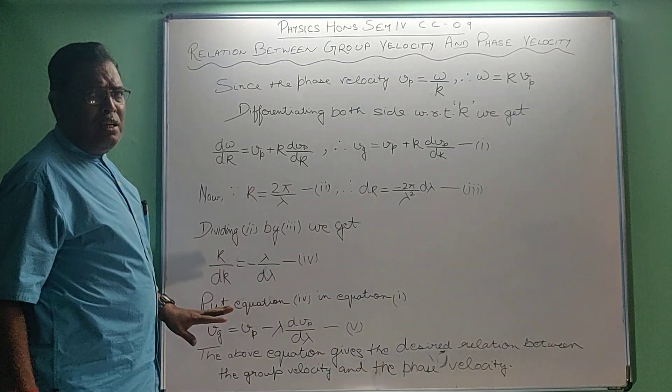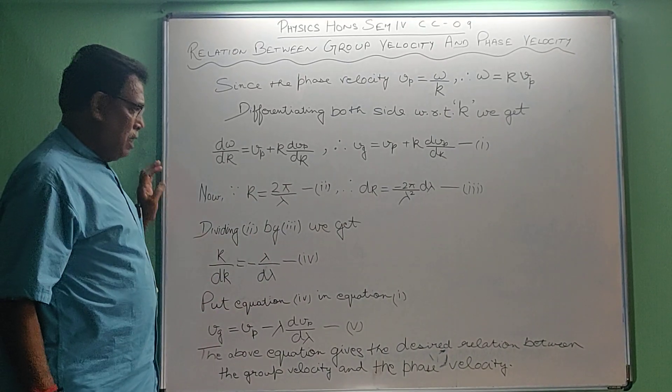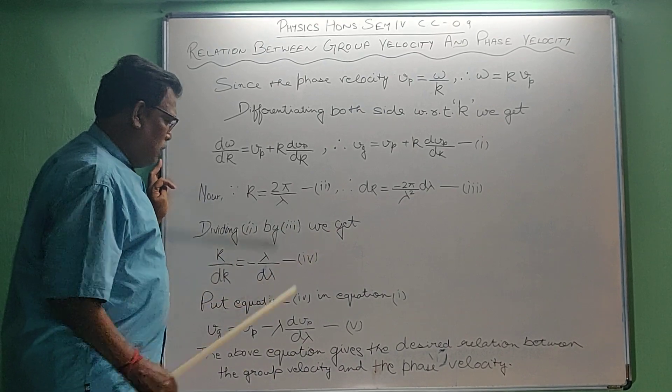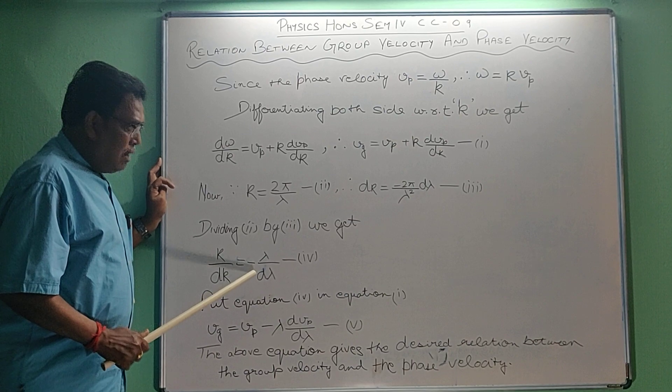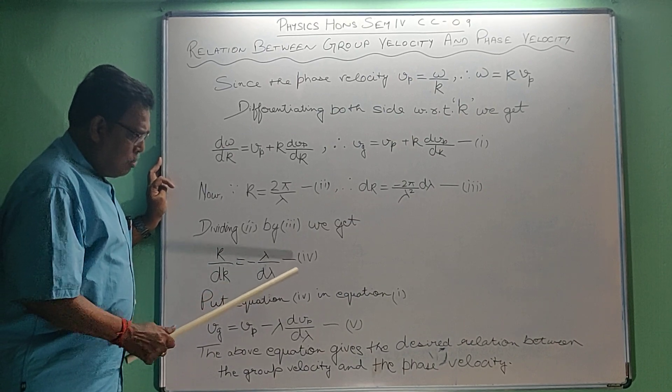Now dividing equation 2 by equation 3 we get k by dk equal to minus lambda by d lambda. It is equation 4.